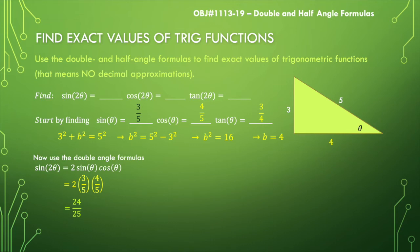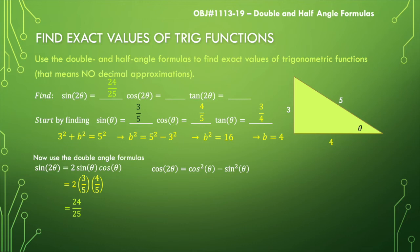Let's try cosine of two theta. There are three different formulas, but you'll almost exclusively choose to use cosine squared of theta minus sine squared of theta. The reason is it produces a common denominator every single time — cosine is adjacent over hypotenuse and sine is opposite over hypotenuse, so both denominators will be the hypotenuse squared. We replace cosine squared theta with four-fifths squared and subtract sine squared theta, three-fifths squared.